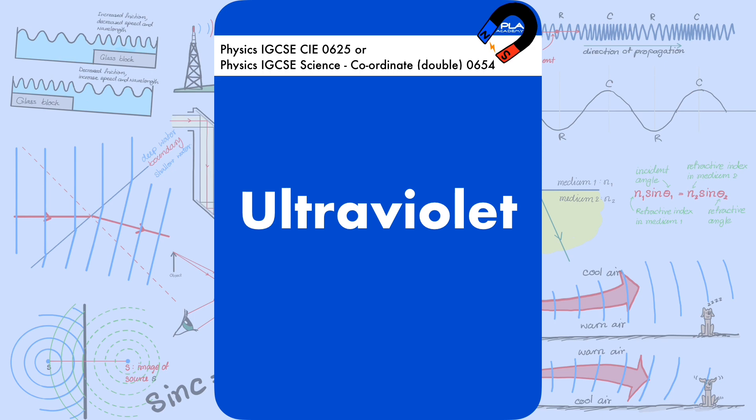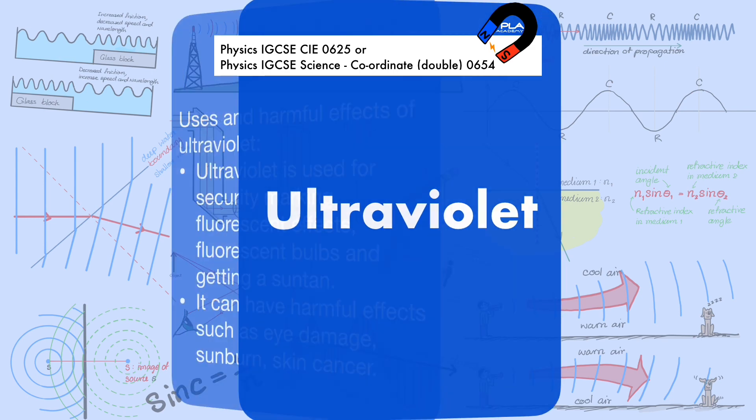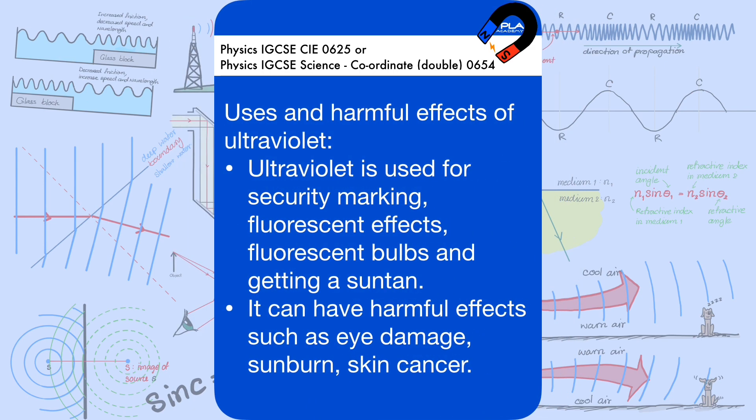Ultraviolet is used for security marking, fluorescent effects, fluorescent bulbs, and getting a suntan. It can have harmful effects such as eye damage, sunburn, and skin cancer.